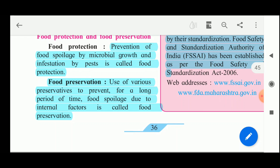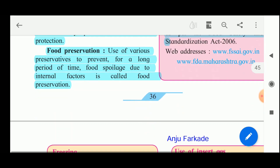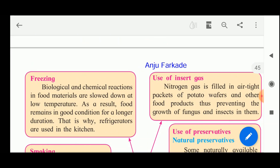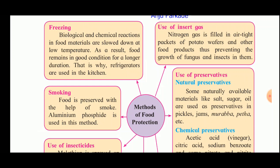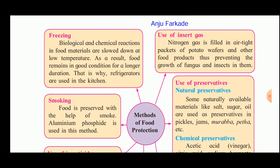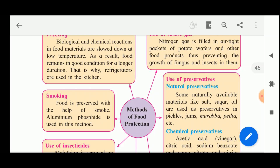Now let us look at the methods of food preservation. The first method is freezing. Biological and chemical reactions in food materials are slowed down at low temperatures. Inside the refrigerator the temperature is about 5 degrees Celsius, and as a result the food remains in good condition for a longer time.